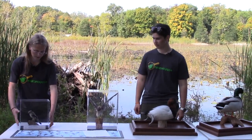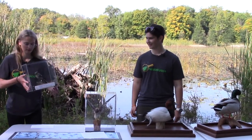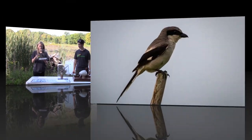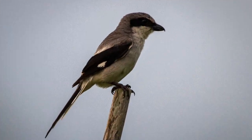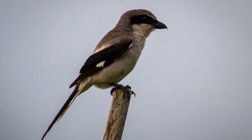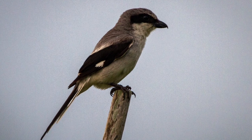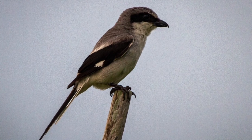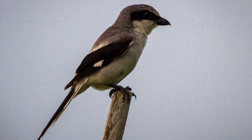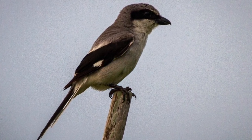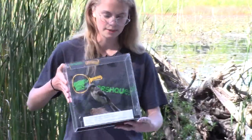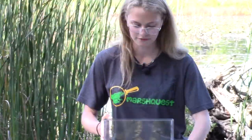This is a songbird — the Loggerhead Shrike. It has three toes pointed forward, built for gripping branches and perching upon grasslands. Their short, cone-shaped beaks are perfect for picking up seeds and other food.